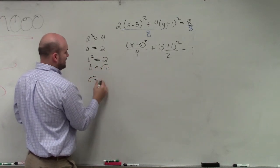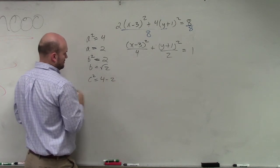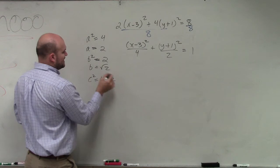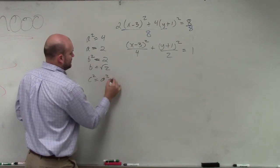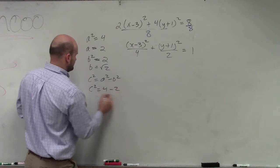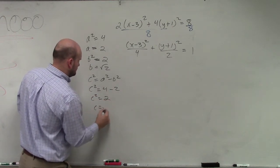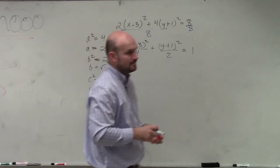And then C squared equals A squared minus B squared. C squared equals A squared minus B squared. Let me just write that out.